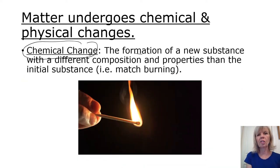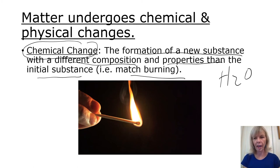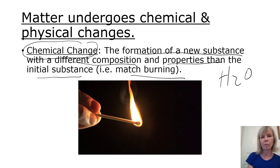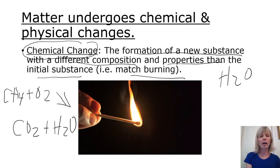A chemical change is the formation of a new substance that has different composition and properties than the initial substance. For example, a match burning — when we light the match, we create something new and can't go back to the original material. In a physical change like water to steam, we could capture the steam and cool it back to liquid water. In a chemical change, you're creating new compounds. For example, in a combustion reaction, CH4 (methane) plus oxygen forms new compounds of carbon dioxide and water — the elements rearrange to form new compounds, so we have a change at the molecular level.